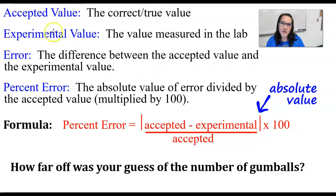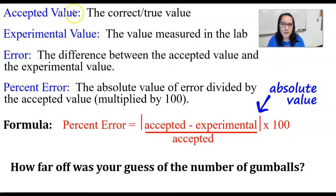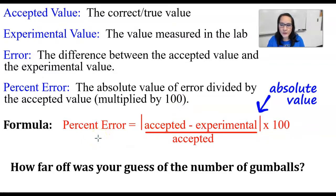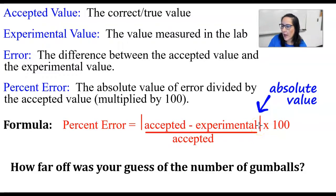There are a couple things you need to know about the percent error equation. The accepted value is the correct true value. The experimental value is the value measured in the lab. The amount of error is the difference between the accepted and experimental values. Percent error is the absolute value of the error divided by the accepted value, multiplied by 100. In formula form: percent error equals the absolute value of (accepted minus experimental), divided by the accepted value, times 100.